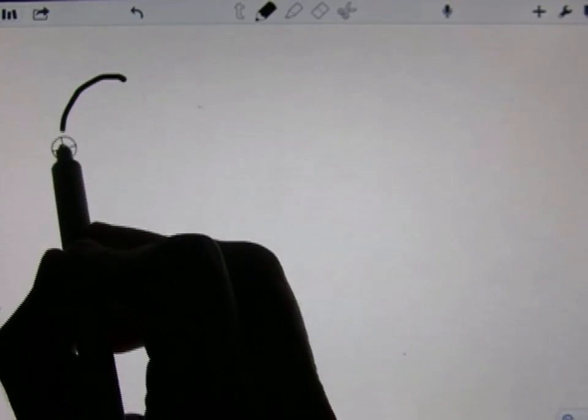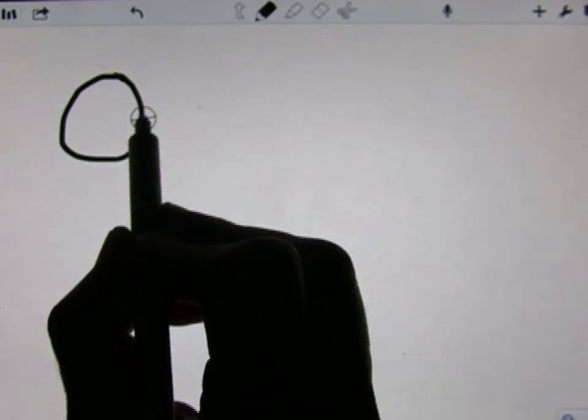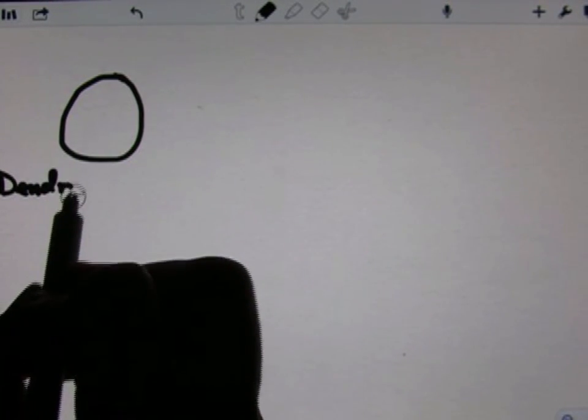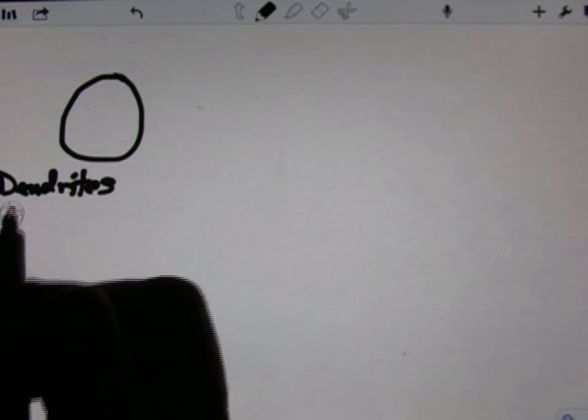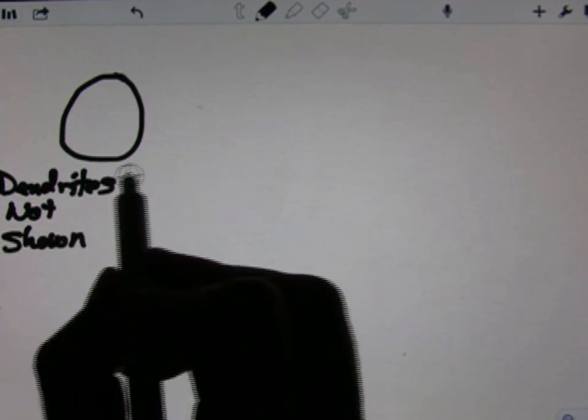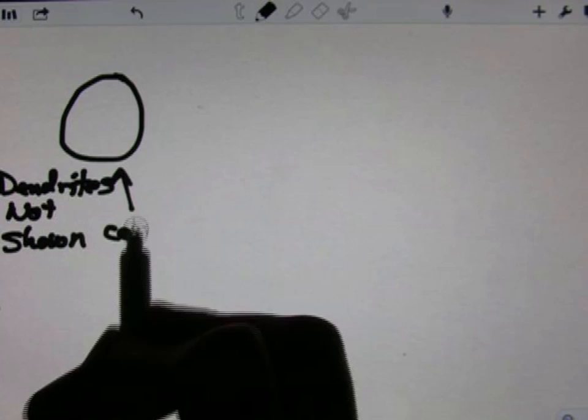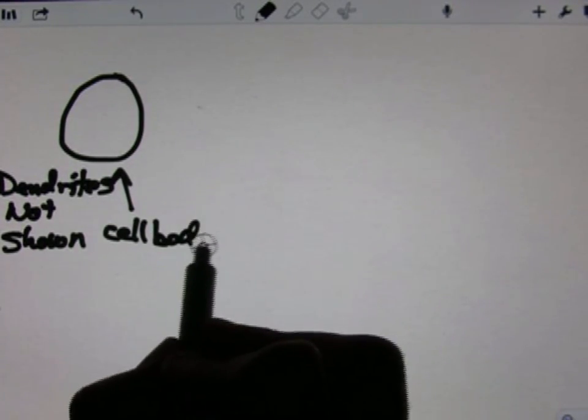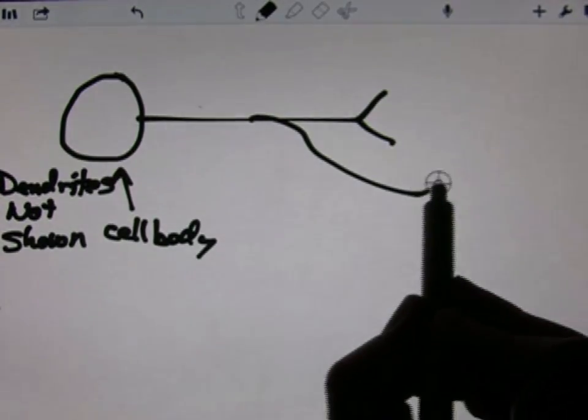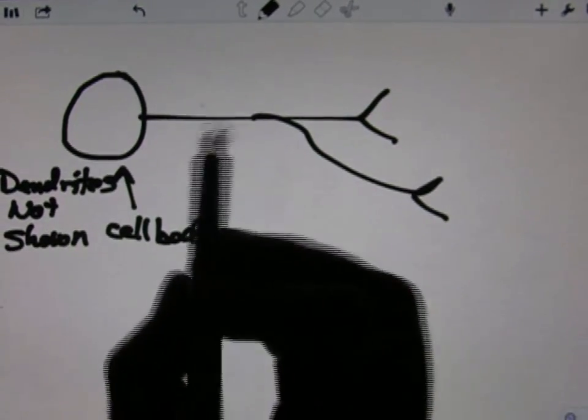So the convention is instead of drawing dendrites, we just draw dendrites not shown and a cell body.